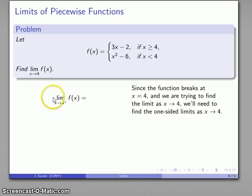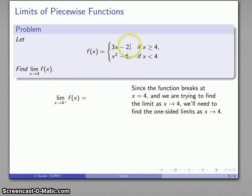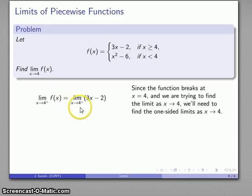We start with the limit as x gets close to 4 but always staying above it. Since x is greater than 4, we use the top rule: 3x − 2. So for the purpose of this one-sided limit, our function is 3x − 2. As x gets close to 4 from above, this expression gets close to 3(4) − 2, which equals 10.